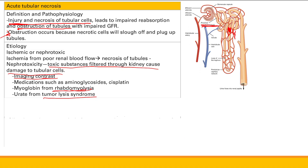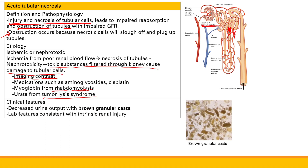Clinical features — this is basically intrinsic renal failure, or intrinsic acute kidney injury. How do we define it? It's either increased serum creatinine or decreased urine output. And the characteristic cast seen with acute tubular necrosis is the brown granular cast.